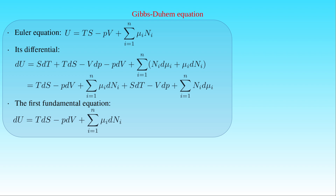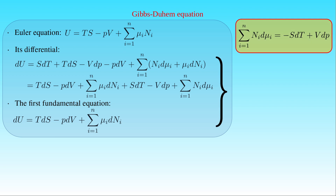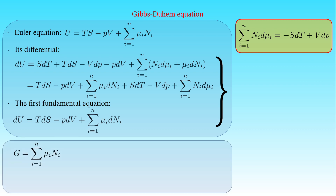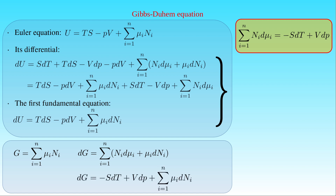By substituting the first fundamental equation into the differential of the Euler equation, we obtain the Gibbs-Duhem equation, which states that the sum of Nᵢ dμᵢ from i equals 1 to N is equal to minus S dT plus V dP. We note that we can also obtain the Gibbs-Duhem equation by computing the differential of the Euler integral for the free enthalpy G, which equals the sum of μᵢ times Nᵢ. Then dG equals the sum of Nᵢ dμᵢ plus μᵢ dNᵢ. Since the last fundamental equation for G gives dG equals minus S dT plus V dP plus the sum of μᵢ dNᵢ, substituting it yields the same Gibbs-Duhem equation.